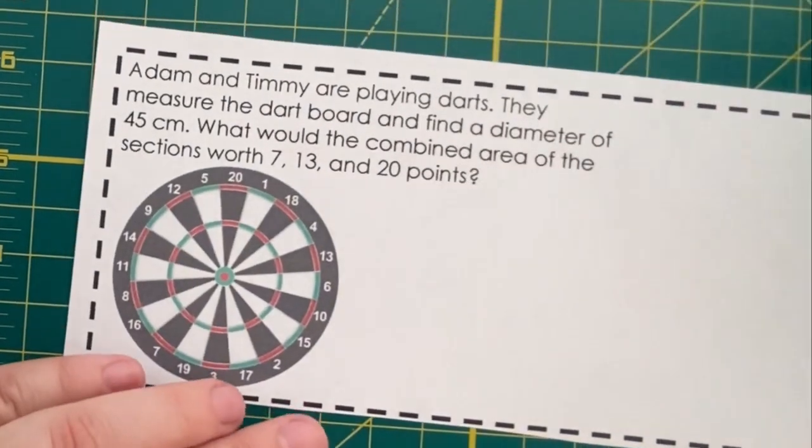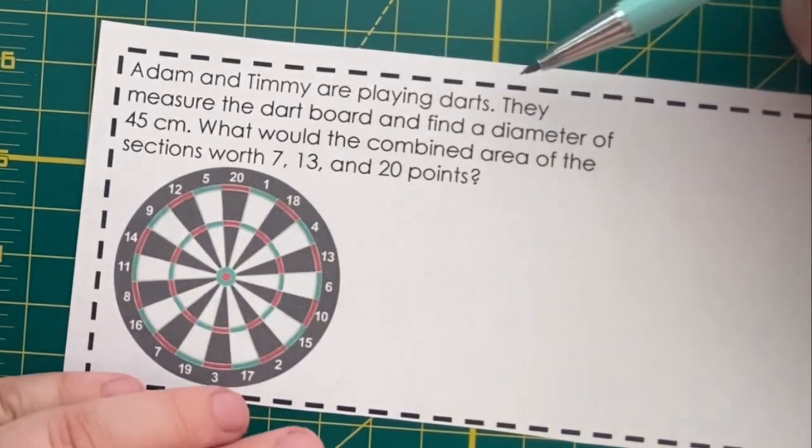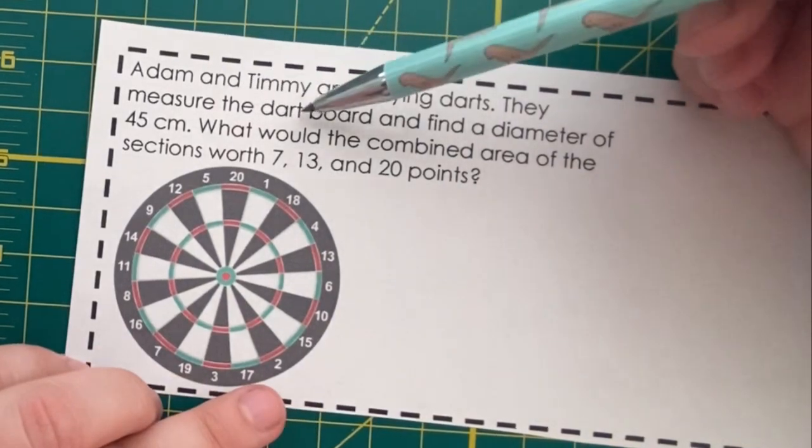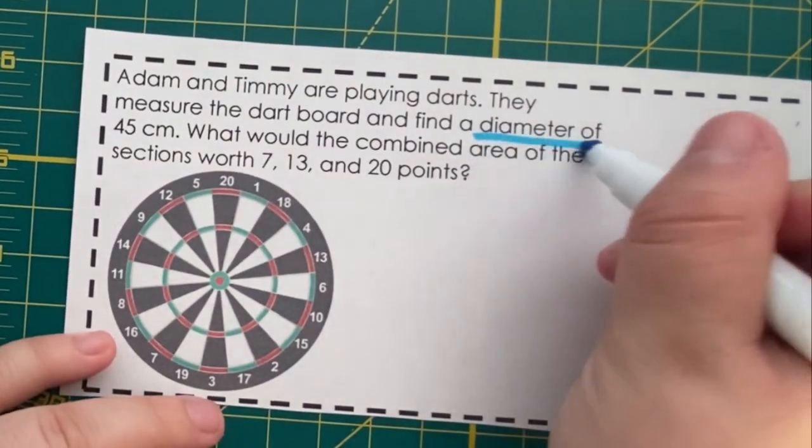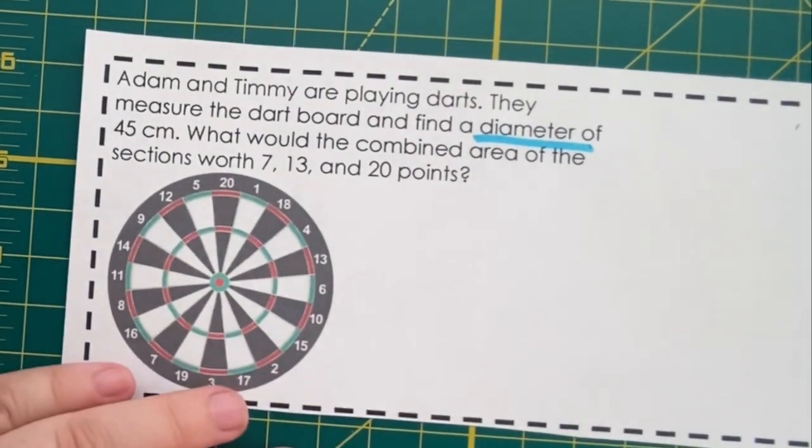Here's our second problem. It says Adam and Timmy are playing darts. They measure the dartboard and find a diameter of 45 centimeters.